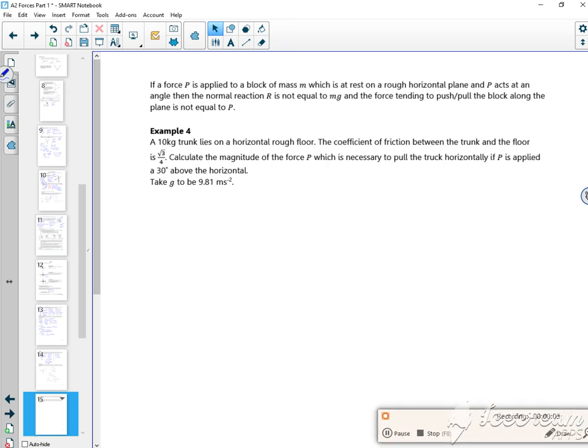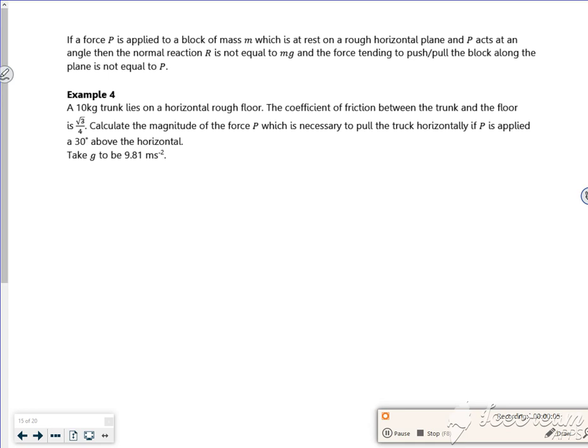Right then, last example for this lesson is quite a nice one. So a 10kg trunk lies on a horizontal rough floor with a coefficient of friction between the trunk and the floor of root 3 over 4. Calculate the magnitude of the force P which is necessary to pull the trunk horizontally if P is applied at 30 degrees above the horizontal.